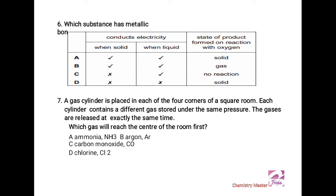MCQ number seven: a gas cylinder is placed in each of the four corners of a square room, and each cylinder contains a different gas stored under the same pressure. The gases are released at exactly the same time. Which gas will reach the center of the room first? This is a hint about diffusion of gases. When gases are diffused and mixed together, the only factor on which the rate of this spreading or diffusion depends is the relative molecular mass. The relative molecular mass decides which gas will be diffused first, and the lightest gas will be diffusing with the fastest rate. You see, out of these four options, which gas has the least relative molecular mass?